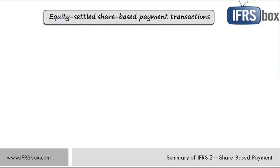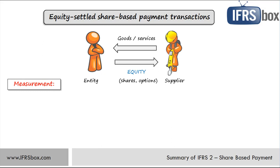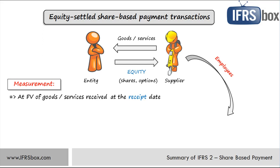Let's take a look at equity-settled share-based payment transactions first. In these transactions, an entity acquires certain goods or services from the supplier, including employees, and pays for these services with its own equity instruments, such as shares or share options. The basic rule is to measure the amount of goods or services received and the corresponding share-based payment at the fair value of goods or services received at the receipt date. However, entities very often provide share-based payments as part of a remuneration package to employees, and in such a case it is very difficult, if not impossible, to determine the fair value of services received from employees. Therefore, IFRS 2 requires using the fair value of equity instruments granted instead.